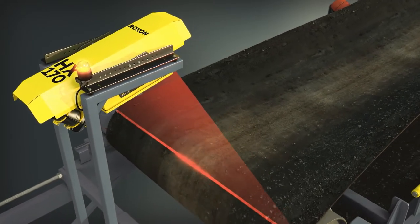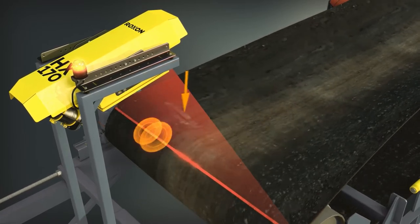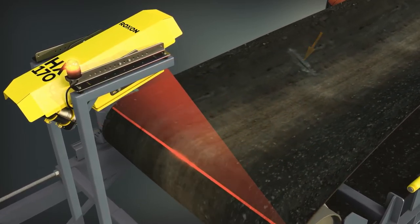The system consists of a single module installed on the tail pulley, acting as a point of reference for precise belt thickness measurement.